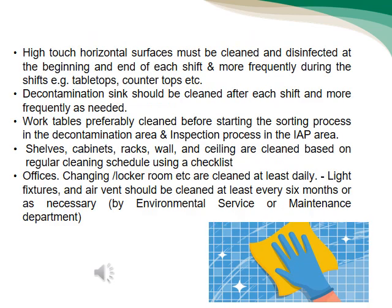High-touch surfaces must be cleaned and disinfected at the beginning and end of each shift, and more frequently during shifts — examples include tables and countertops. Decontamination sinks should be cleaned after each shift and more frequently as needed. Work tables should preferably be cleaned before starting the sorting process. Shelves, cabinets, racks, walls, and ceilings are cleaned based on a regular cleaning schedule using a checklist. Office and changing/locker rooms are cleaned at least daily. Light fixtures and air vents should be cleaned at least every six months by the environmental services or maintenance department.